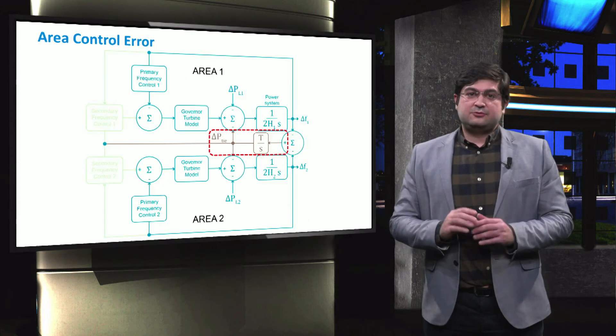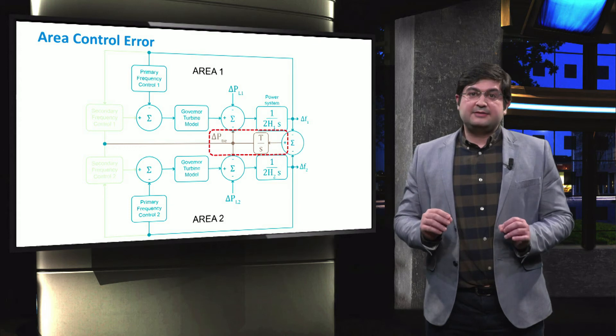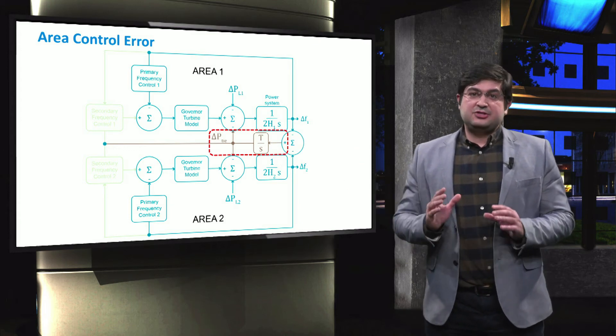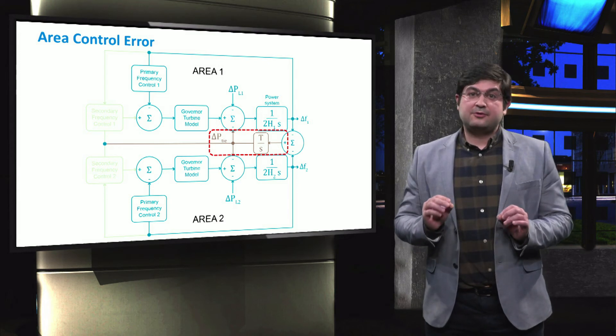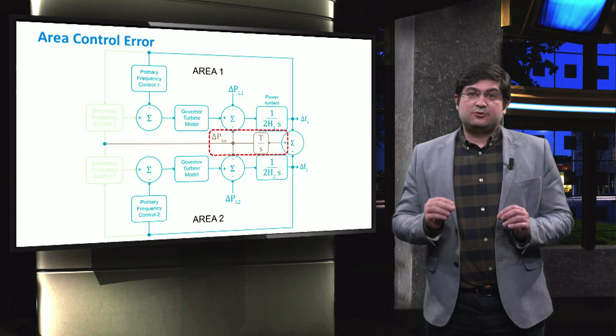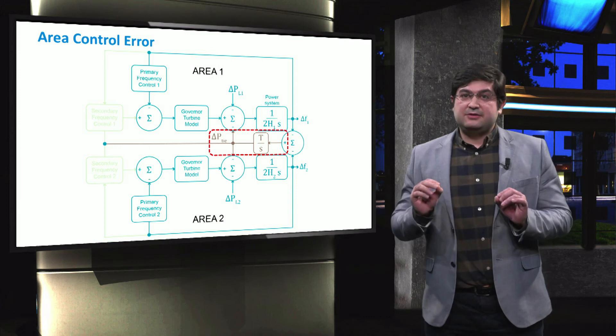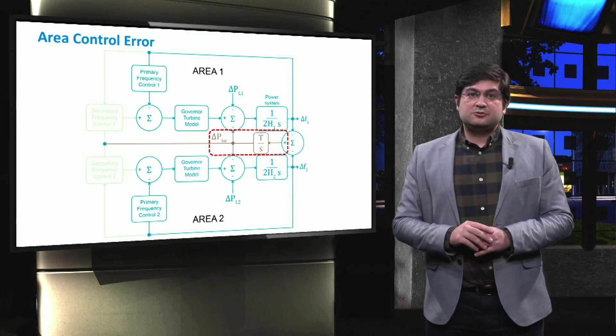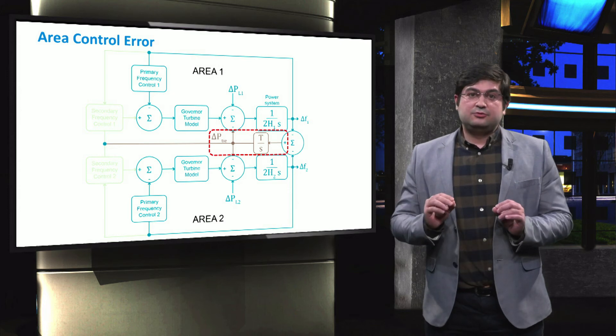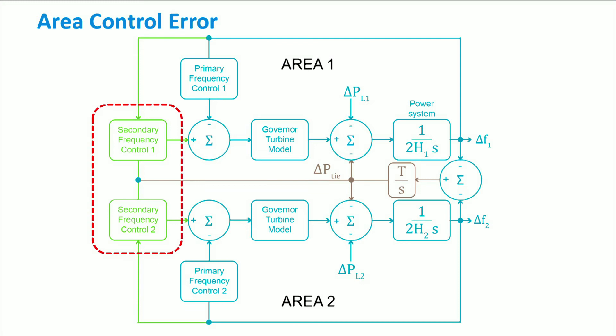We present the frequency control schemes of two areas which are connected to each other through a transmission line. Within each area, we refer to the area control error, or ACE, as the excess or the deficiency of a certain amount of active power. This error is not only eliminated by the generating units within the area, but also partly covered by the other areas through the tie line. The amount of the power which is being exchanged between two areas during the disturbance is obtained according to the frequency deviations in these two areas. Finally, the frequency of each area is adjusted to the nominal value through the secondary controllers.